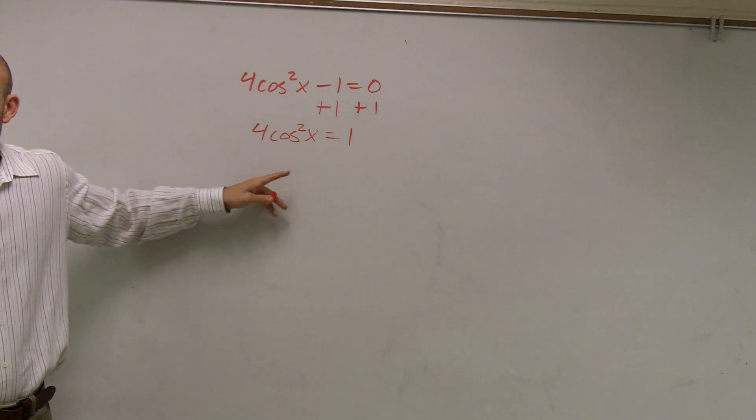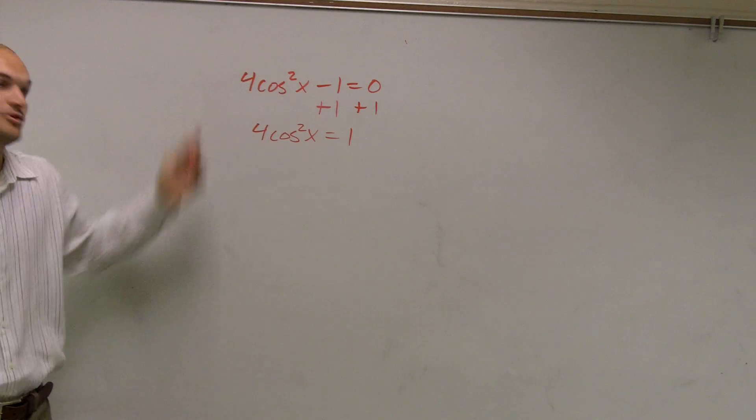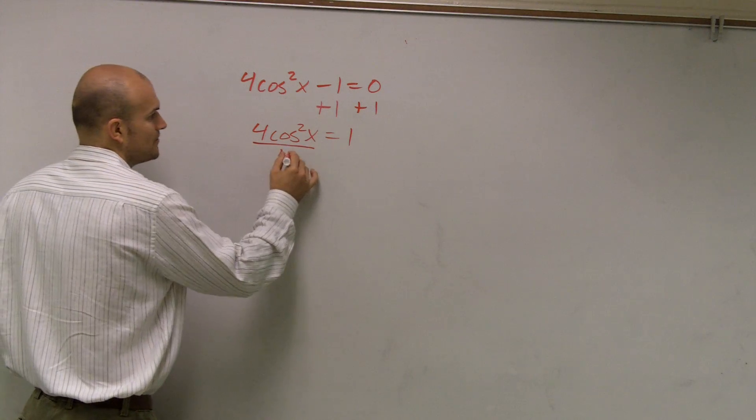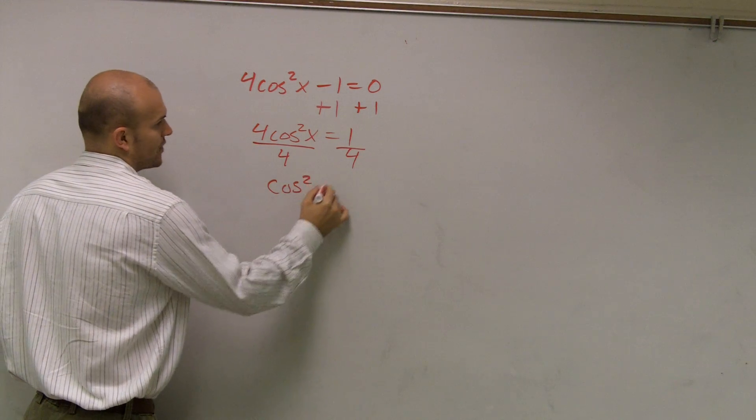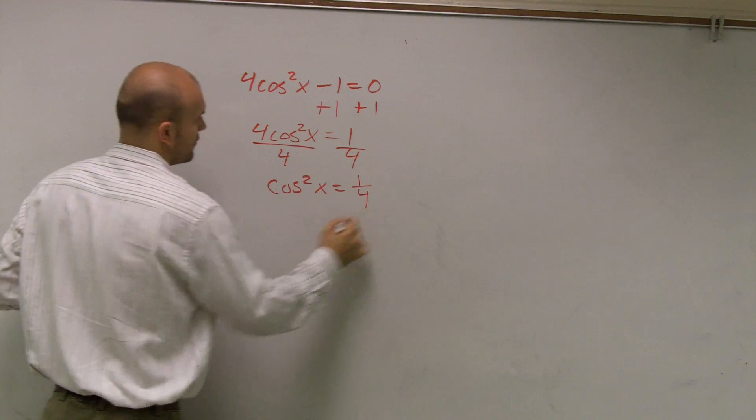Now let's get rid of that 4. I'm going to undo multiplication by division. Therefore, I have cosine squared x equals 1/4.